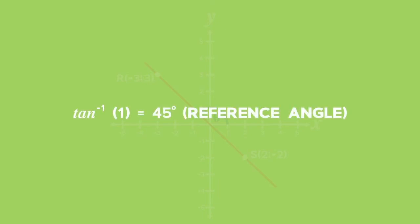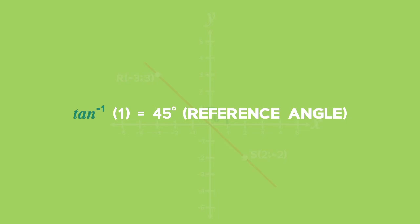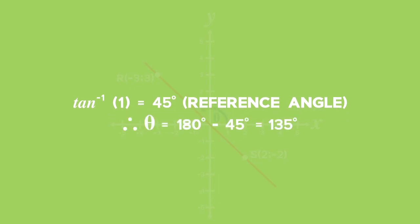You get the answer of 45 degrees. This is not the inclination of the line — it is the reference angle. Since the tan ratio is negative, this tells us we are looking for an obtuse angle, which lies in the second quadrant where tan is negative. To find the angle, subtract 45 degrees from 180 degrees, and you get theta equals 135 degrees.